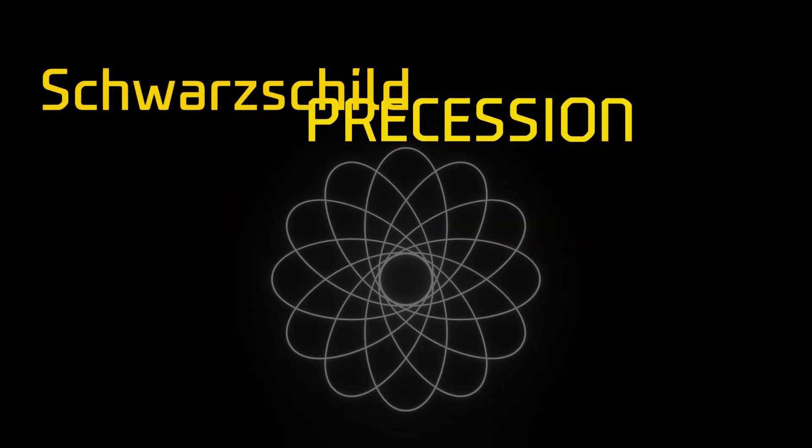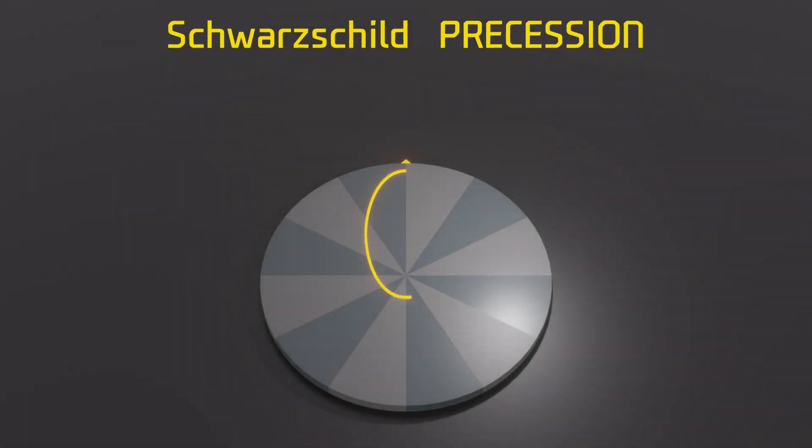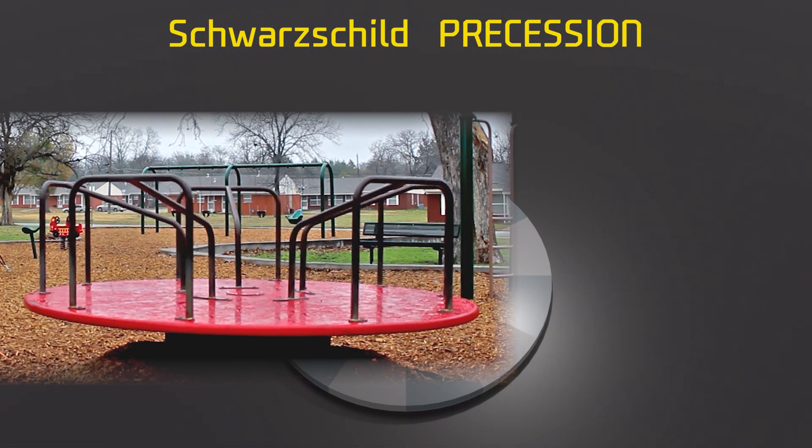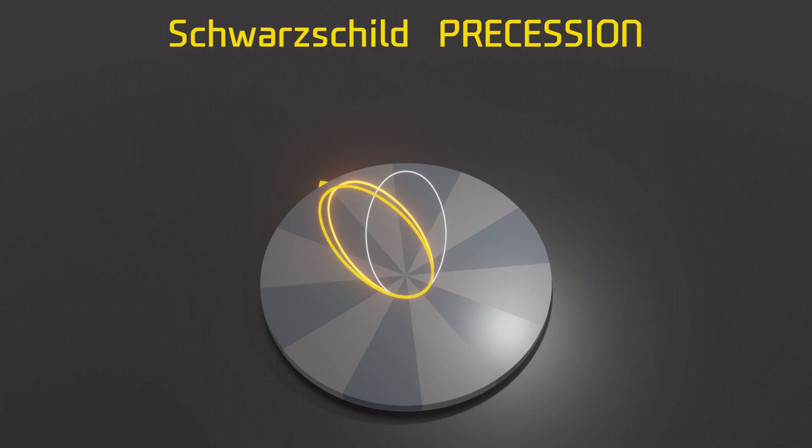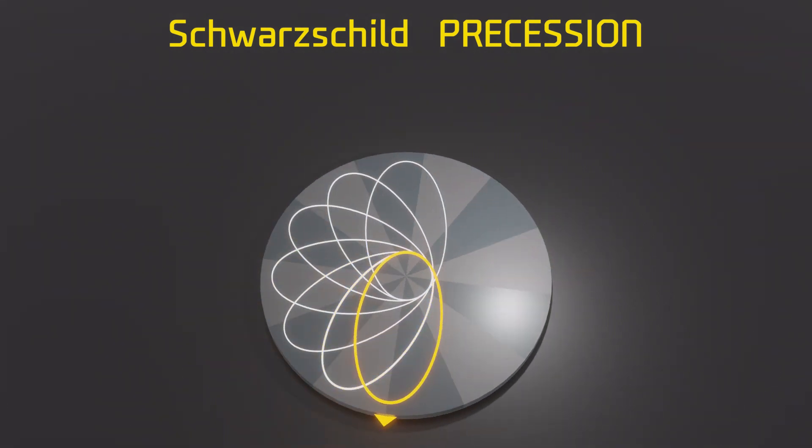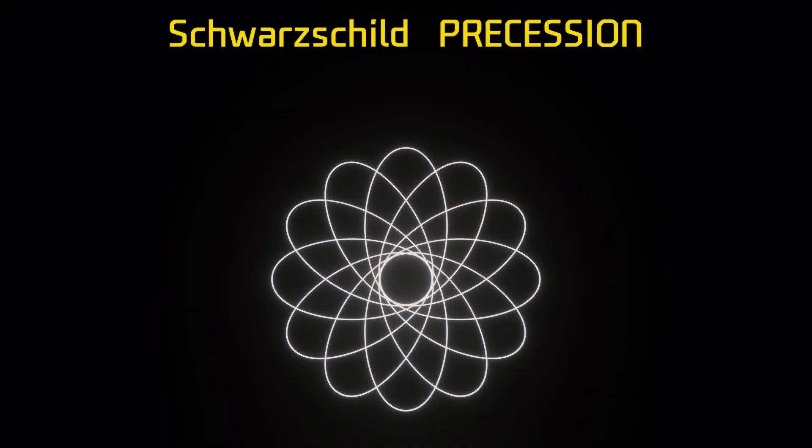First, let's look at a Schwarzschild precession. Imagine drawing an ellipse on a merry-go-round. Each time you complete one ellipse, the merry-go-round also rotates, which makes a precession like this, or like these.